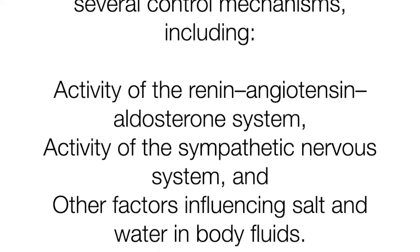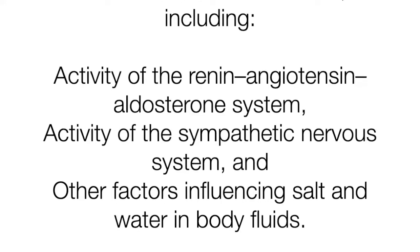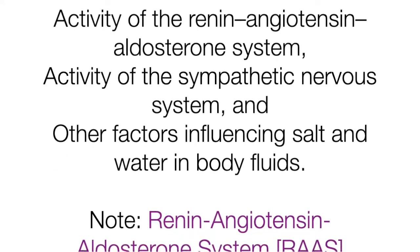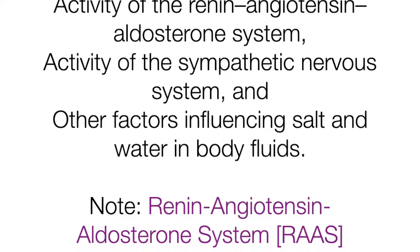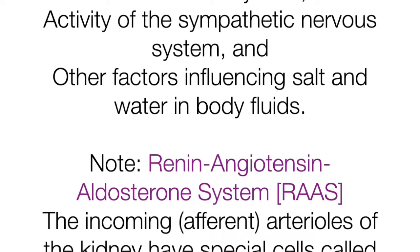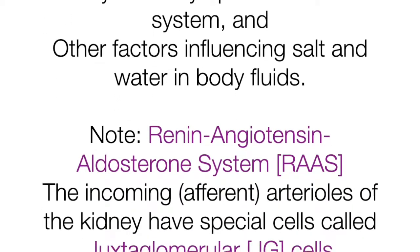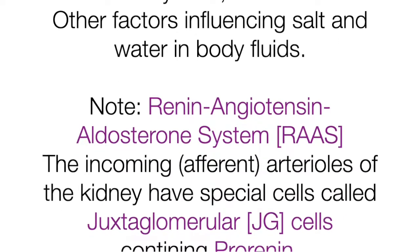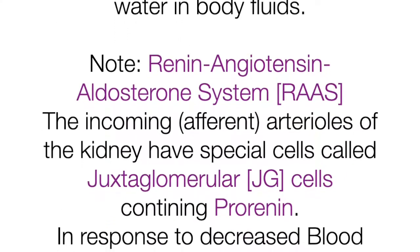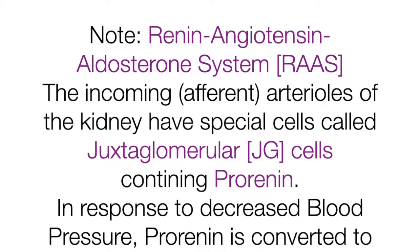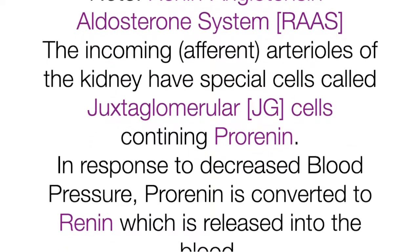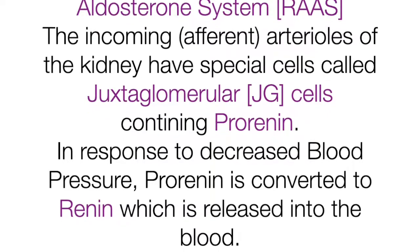The renin-angiotensin-aldosterone system (RAS): the incoming afferent arterioles of the kidney have special cells called juxtaglomerular (JG) cells containing prorenin. In response to decreased blood pressure, prorenin is converted to renin, which is released into the blood.